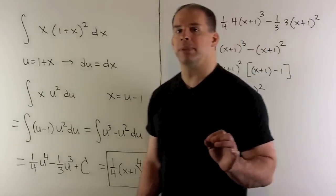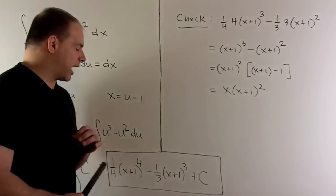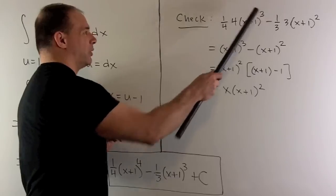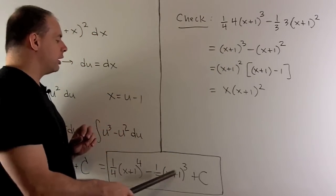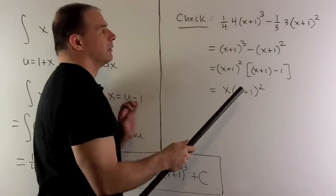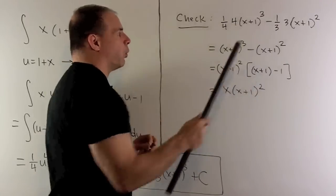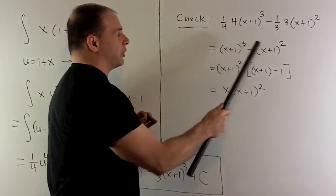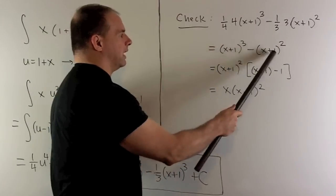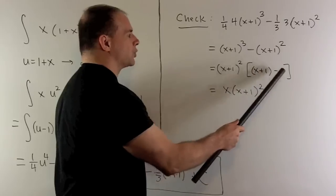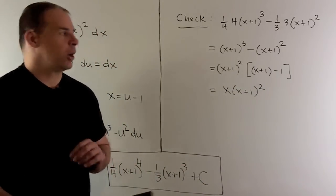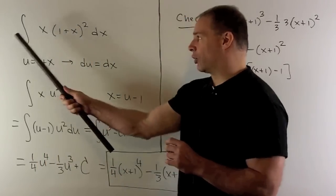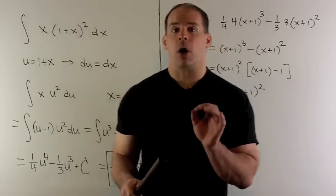Of course we want to check our work, so I take the derivative of our answer. Here it's going to be two chain rules. The 4 comes down and we take 1 off the exponent; the 3 comes down and we take 1 off the exponent. The derivative of the insides are both 1, so nothing else is added. I can factor an x plus 1 squared out of both terms, leaving me with x plus 1 minus 1. That collapses to x, and I'm left with x times x plus 1 squared — that matches my integrand, so our work checks out.